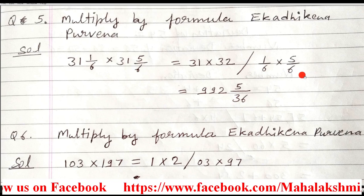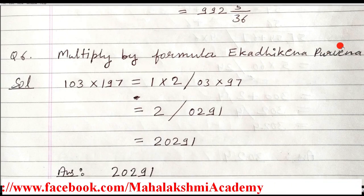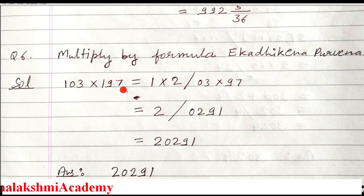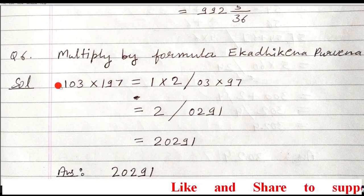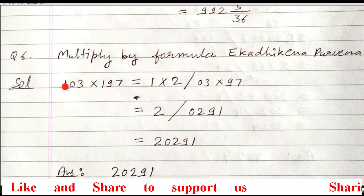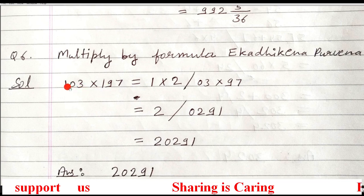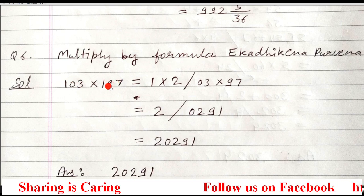Now we will move to question number 6, which is also based on the Ek Adhikena Purvena method. But in this question, we don't have any fractions — we have the complete numbers 103 multiplied by 197. From the rightmost digit, find out the identical digits. When we search here, the identical digit is only 1. After that, all digits are different — 0 is not same as 9, and 3 and 7 are different.